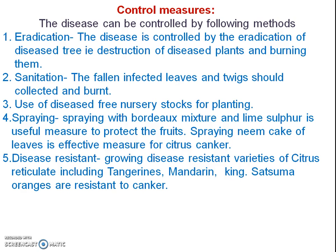Number five, Disease-resistant varieties: Growing disease-resistant varieties of citrus, including Citrus reticulata varieties such as Tangerine, Mandarin, King, Satsuma, and Summa Orange, are resistant to canker.